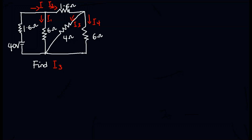The first thing we will do is find the current in the circuit. To find the current, since you know the total voltage, you must find the total resistance. From this circuit you can see that the 4 ohms and the 6 ohms resistors will be in a parallel connection, so you are going to have 4 parallel with 6.